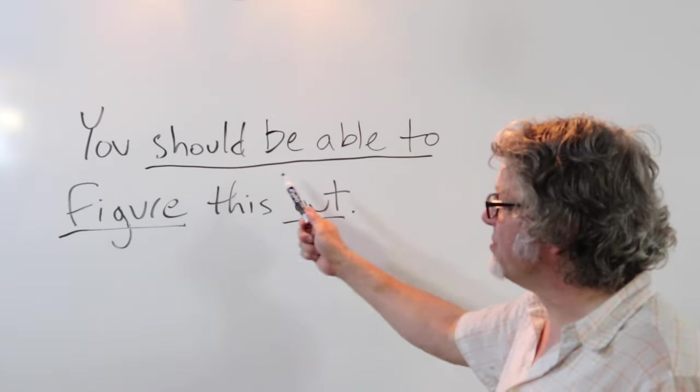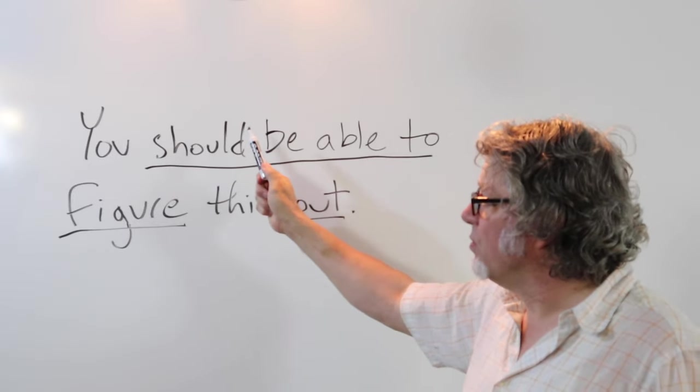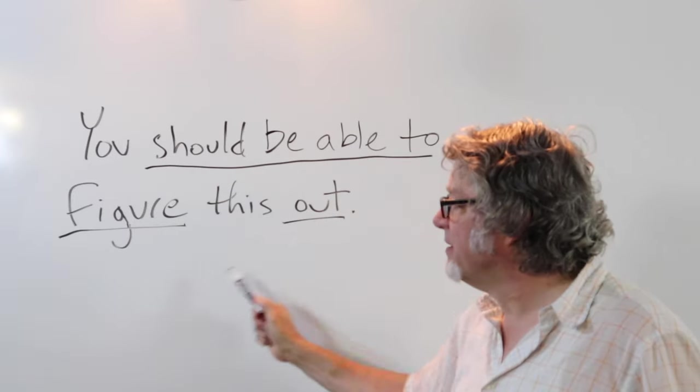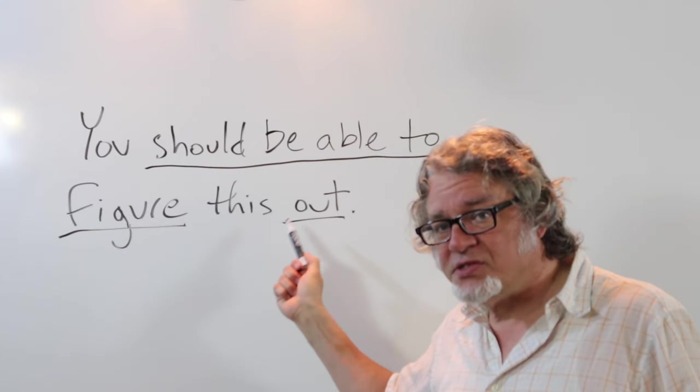Altogether this is the verb phrase. It has one, two, three, four, five, and you could include this—six words.